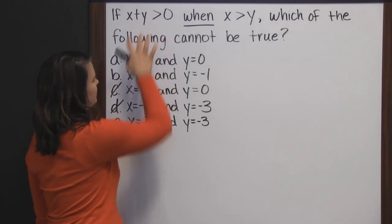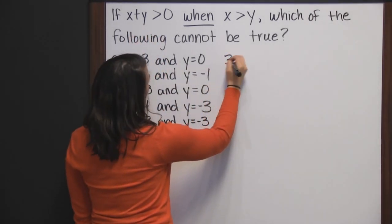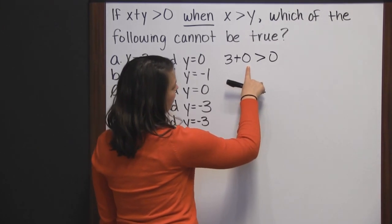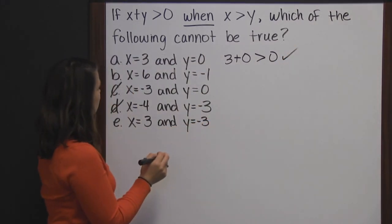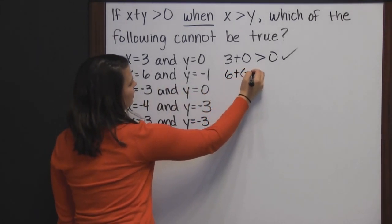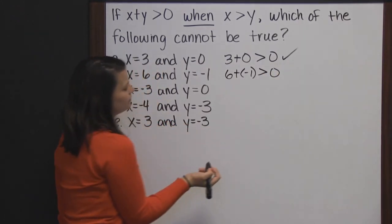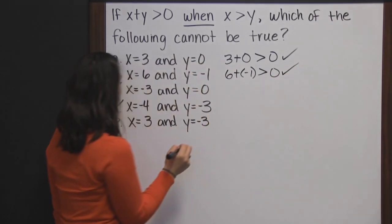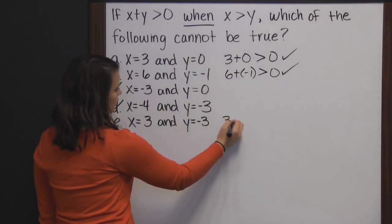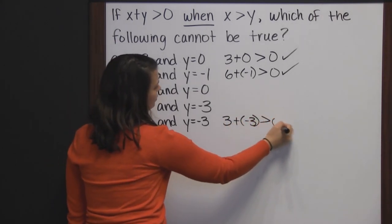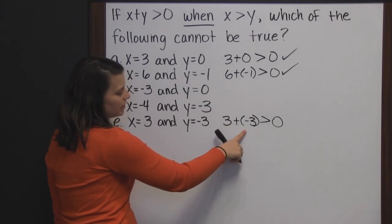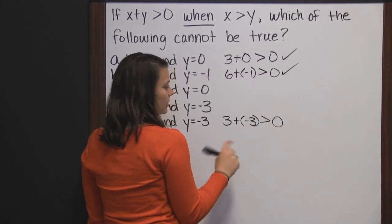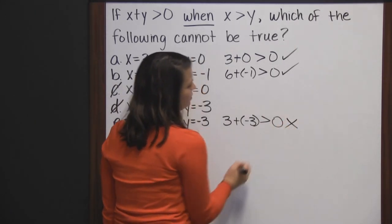Now we check whether they satisfy x plus y greater than zero. A: three plus zero is three, and three is greater than zero — it works. B: six plus negative one is five, and five is greater than zero — it works. E: three plus negative three is zero. But zero is not greater than zero — zero is simply equal to zero. So this one is not true. We found our answer — E.